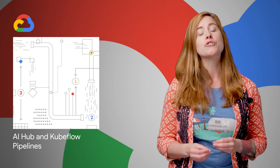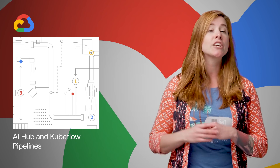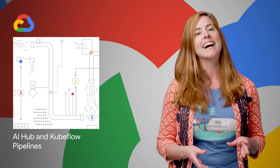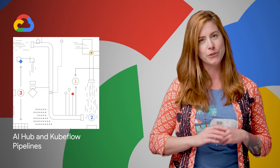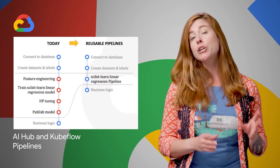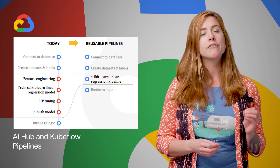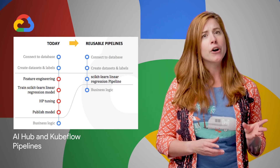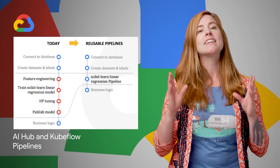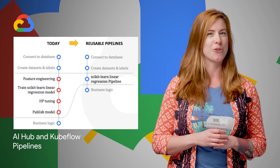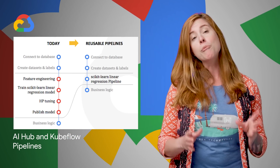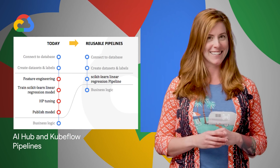Last week, the team introduced both the AI Hub and Kubeflow Pipelines to help make AI simpler, faster, and more useful. AI Hub has plug-and-play ML content, including pipelines, Jupyter notebooks, TensorFlow modules, and more. Kubeflow Pipelines is a new component of Kubeflow that packages ML code just like building an app so that it's reusable to other users across an organization. For more details on both, head on over to the link.